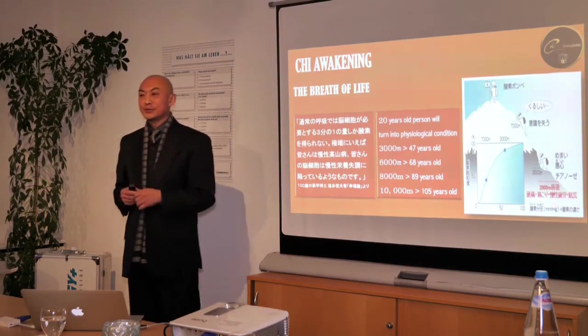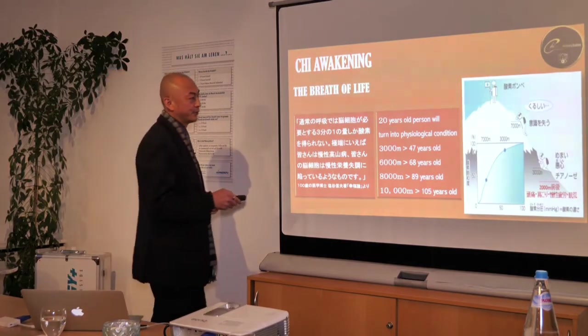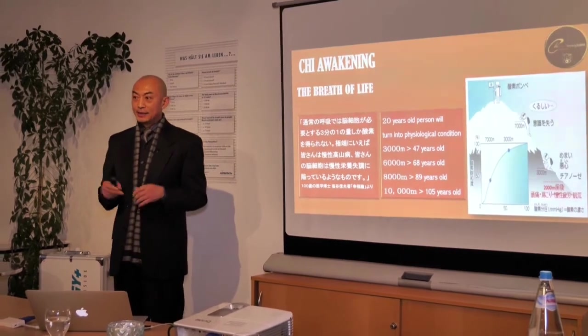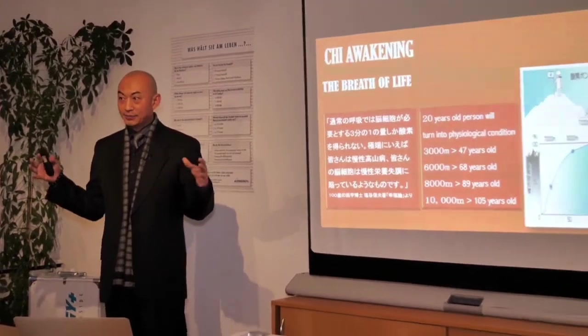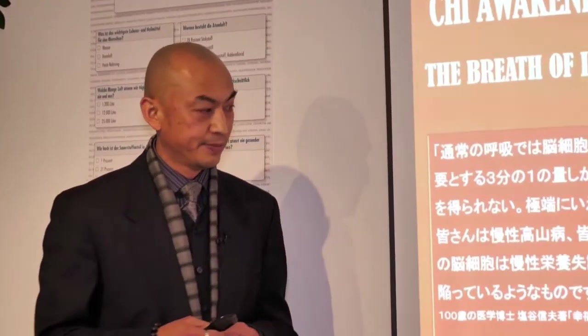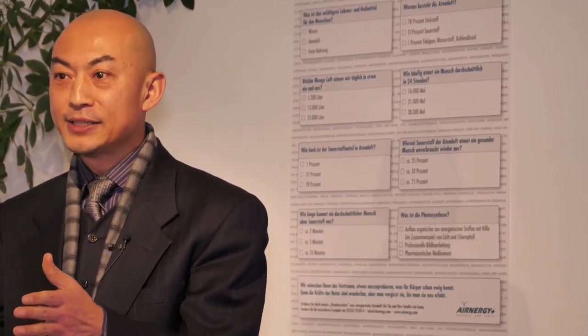Imagine a person 20 years old. If you go up to an altitude of 3,000 meters above sea level, with the lack of oxygen and air pressure, you become like a 47-year-old. And if you go up to 8,000 meters, you'll be like someone 89 years old. This is how your body is linked to not just oxygen, but energy and electricity.